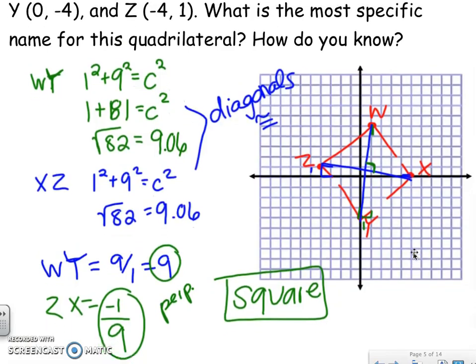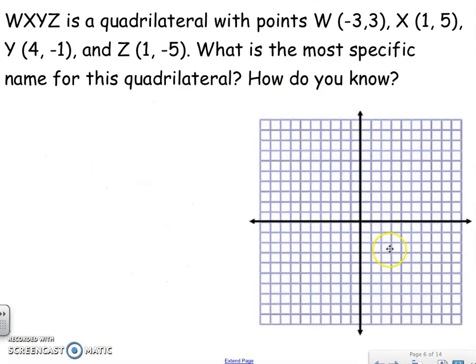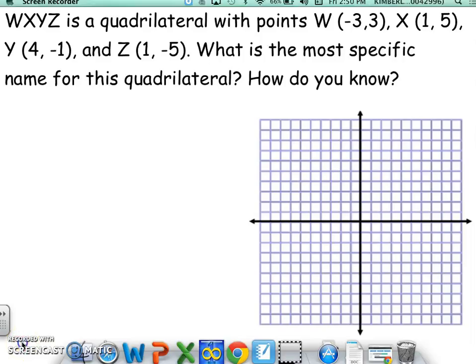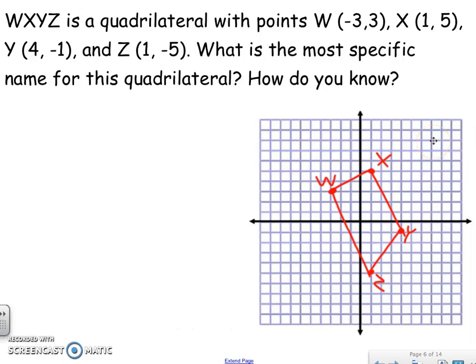If you have any questions, please let me know. We're going to move on to the next shape. What kind of shape is this, and how do you know? Graph it first. After graphing, notice it kind of looks like a trapezoid turned on its side. To prove it's a trapezoid, I need to find the slopes of all the sides and make sure I have two parallel sides. It looks like XY is parallel to WZ — let's check.